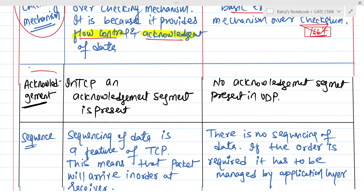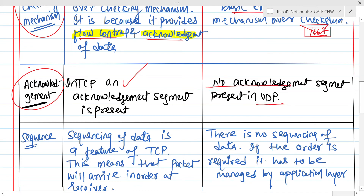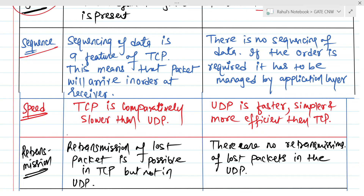The next factor is acknowledgement. Acknowledgement is present in TCP, but no acknowledgement is present in UDP — we don't have any kind of acknowledgement in UDP. Regarding sequencing, sequencing of data is a feature of TCP, meaning whatever data is received by the receiver will be in order. But no sequencing of data is there in UDP.